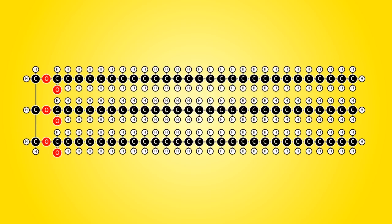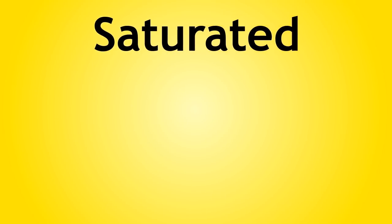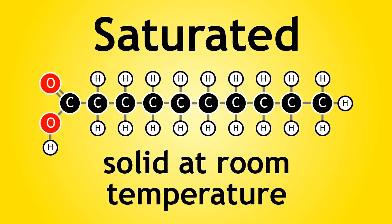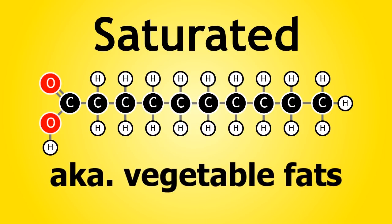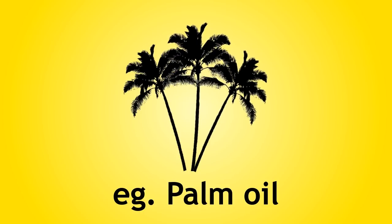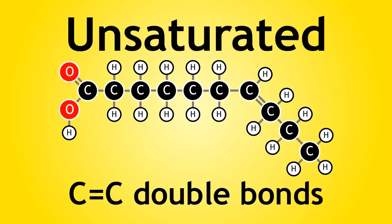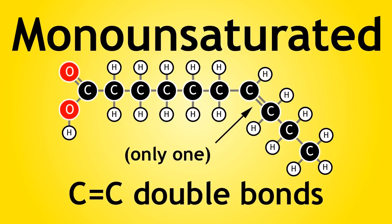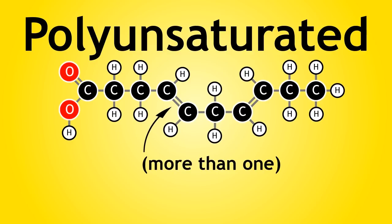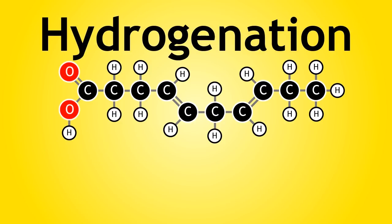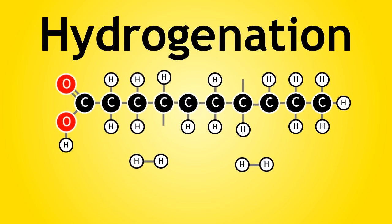These tails can be saturated or unsaturated. Saturated means there are only carbon-carbon single bonds. Saturated plant oils are solids at room temperature and are also known as vegetable fats — an example is palm oil from oil palm trees. Unsaturated means there are carbon-carbon double bonds within the fatty acid tail. A monounsaturated oil has one carbon-carbon double bond, while a polyunsaturated oil has more than one. Most unsaturated oils are liquids at room temperature. These unsaturated oils can be hydrogenated through a process called hydrogenation, which hardens the oil and is a key step in the production of margarine.